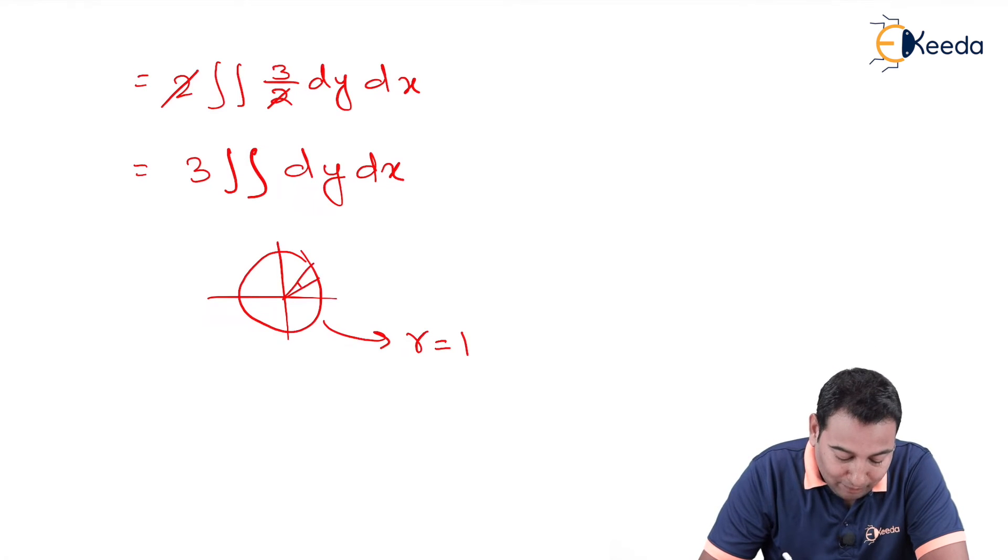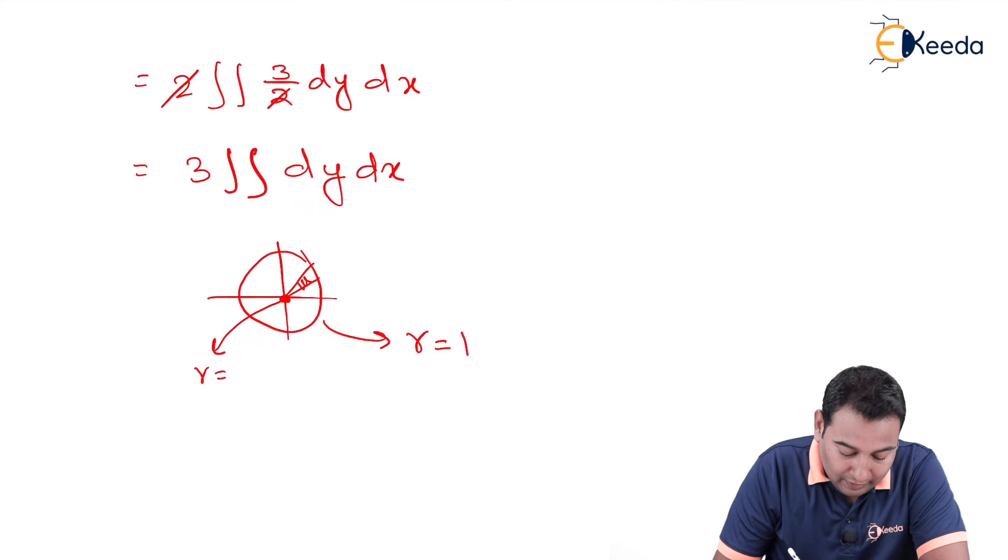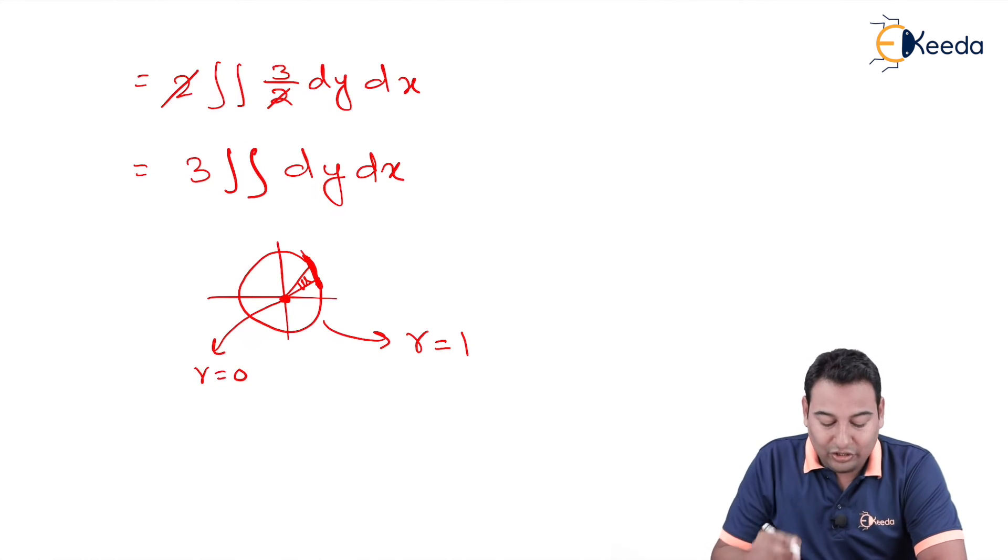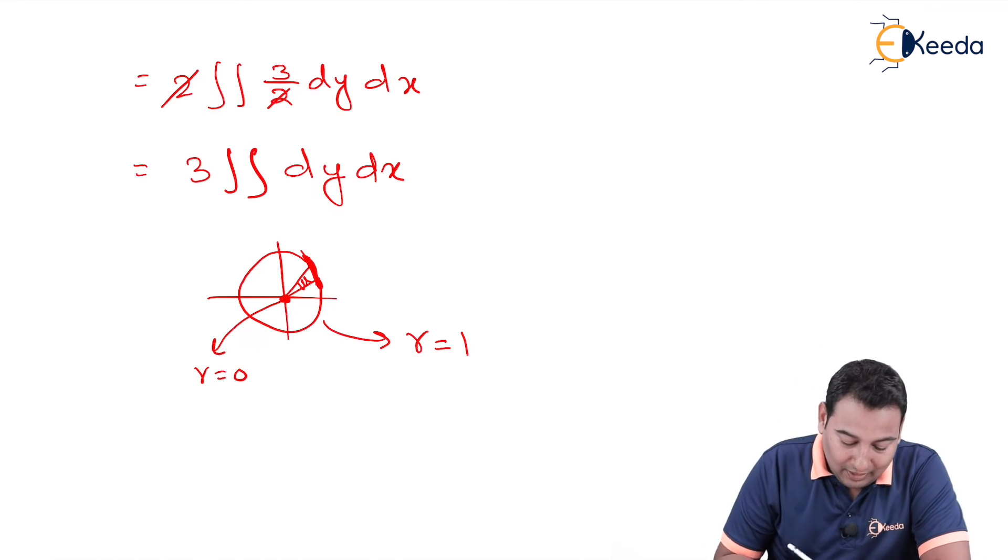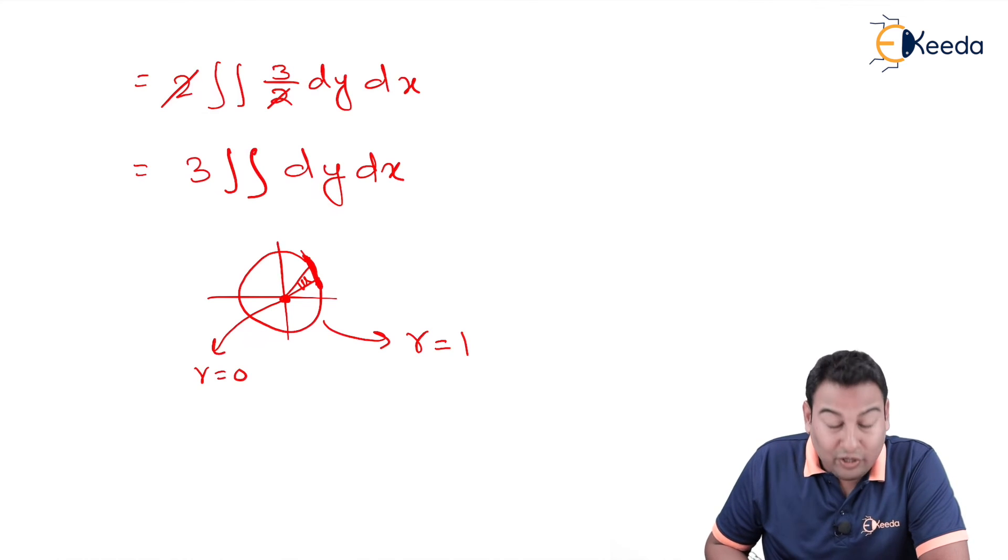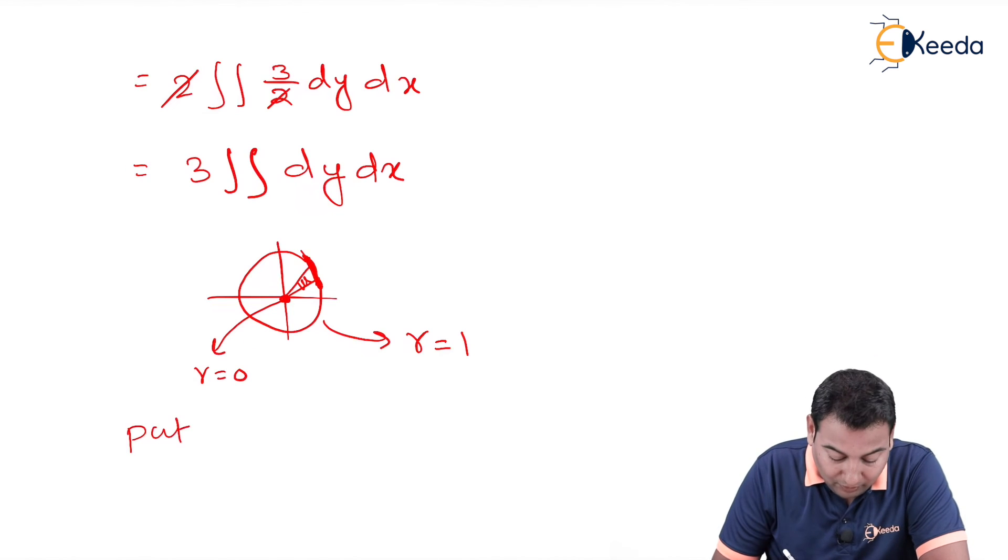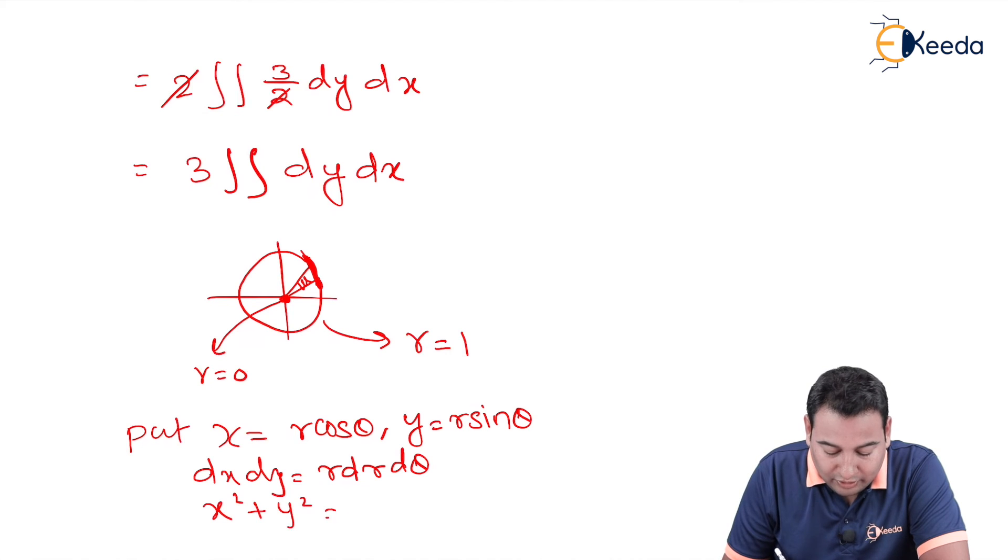This is your circle: x square plus y square equals 1 or simply r equals 1. Let's consider the angular strip, polar strip. Here, friends, r equals 0 at this point. At this point r equals 1. And to cover the entire region, the strip will complete the whole circle. Therefore theta will be from 0 to 2 pi. And as we know, we are going to make few substitutions: x equals r cos theta, y equals r sin theta. What next? dx dy equals r dr d theta. And finally, x square plus y square equals r square.